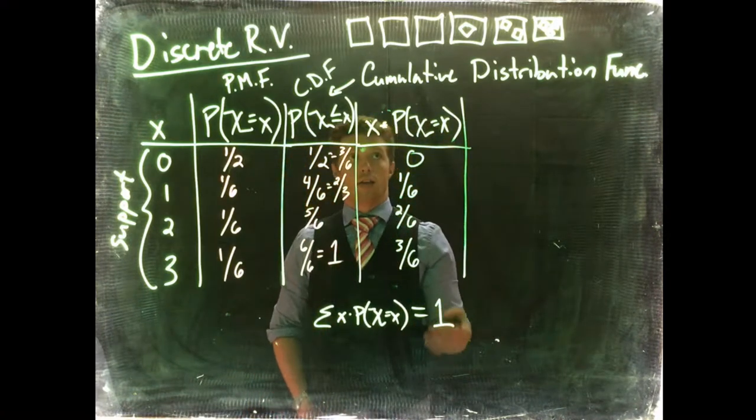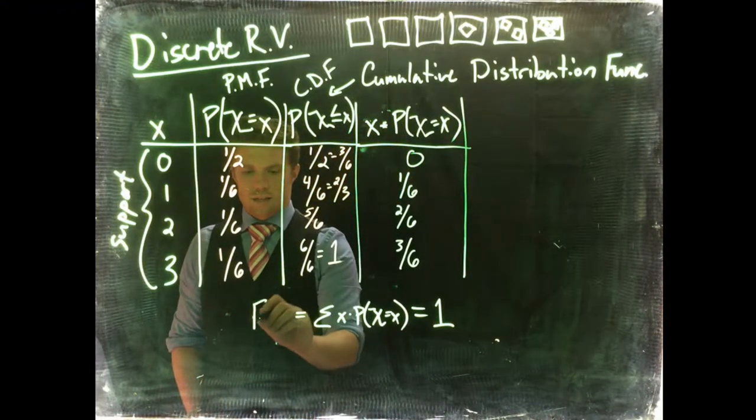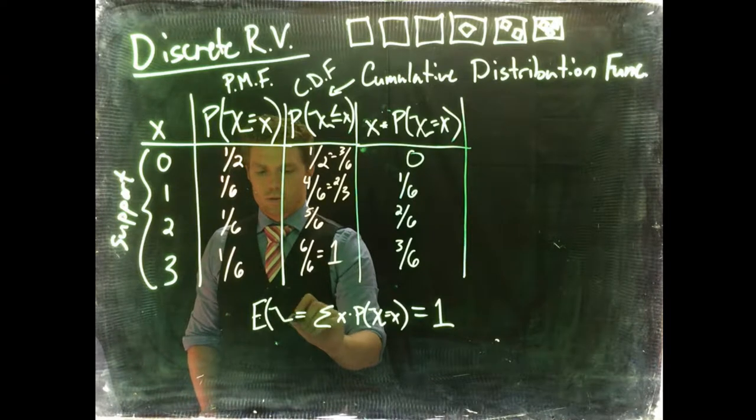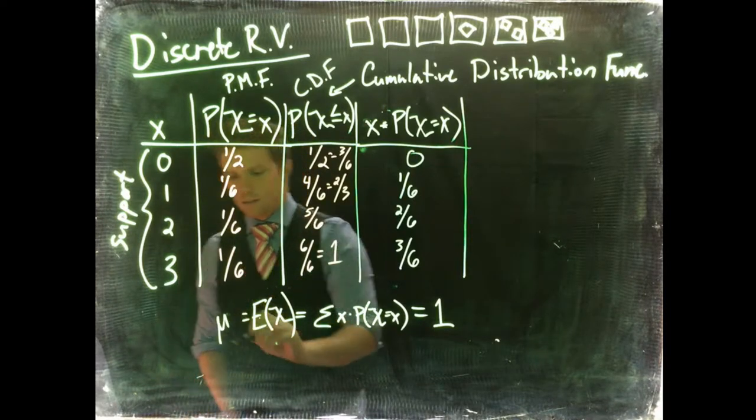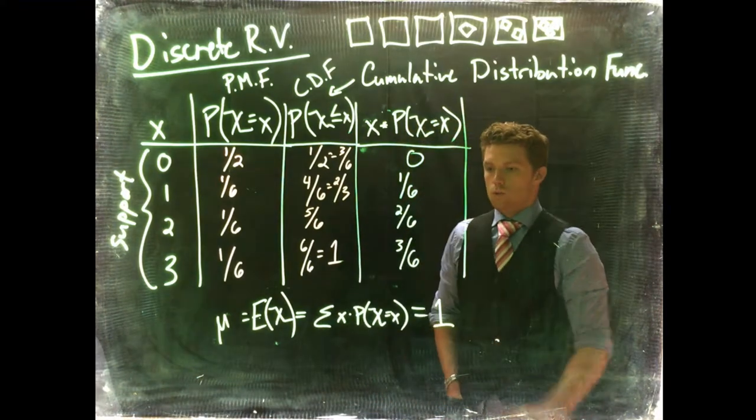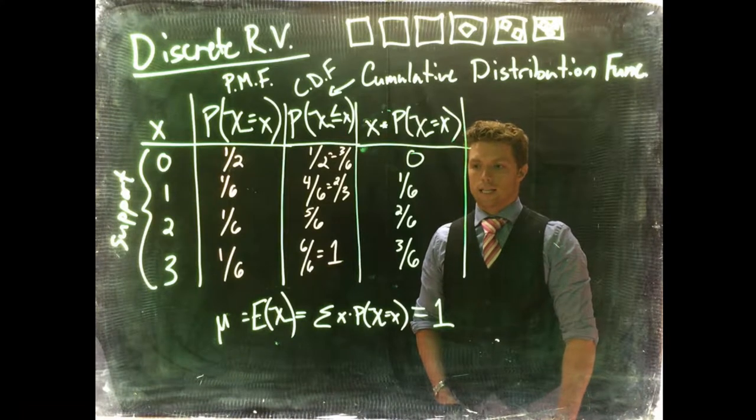Your expected value is to roll a 1. So we can also write this as the expected value of our random variable, and for us this is basically equal to mu or our average. So this is how we are able to figure out our expected value.